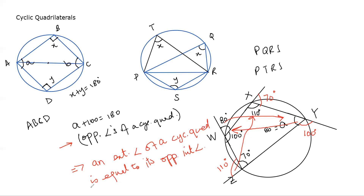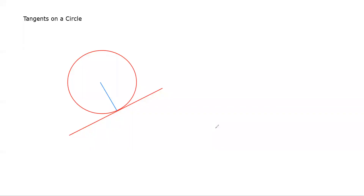Now we move on to tangents on circles. When we have a tangent on a circle, the point of contact is A and the line AB is the tangent. We have a key property: the radius is perpendicular to the tangent at the point of contact.